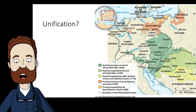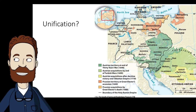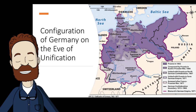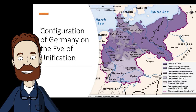Prussia remained firmly opposed to Napoleon and had shared the glory of his defeat at Waterloo. In the place of a nation, there existed 39 German states, including Austria and Prussia, and only Austria and Prussia were strong enough to lead any unification movement. The question really was: why not Austria?